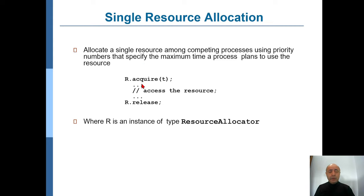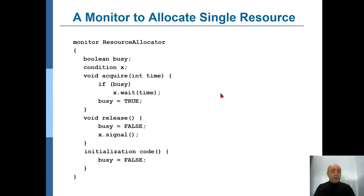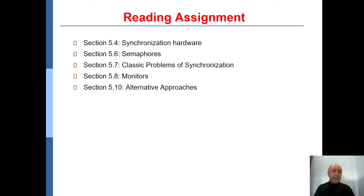It is also possible to request a resource by calling acquire and specifying a maximum time. The process says: I want resource R, and when I get it I will use it for at most T time units. When done, you call release on that resource. The acquire method takes a time parameter; if the resource is busy it waits for that time and sets busy to true. When you call release, it sets busy to false and signals. Initially, all resources are not busy. That will be the end of this chapter.